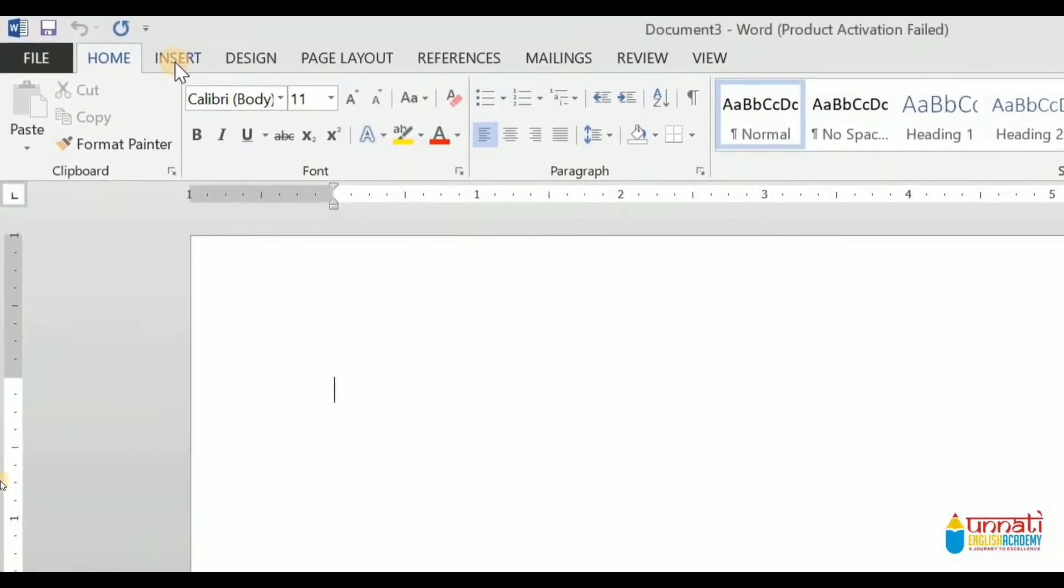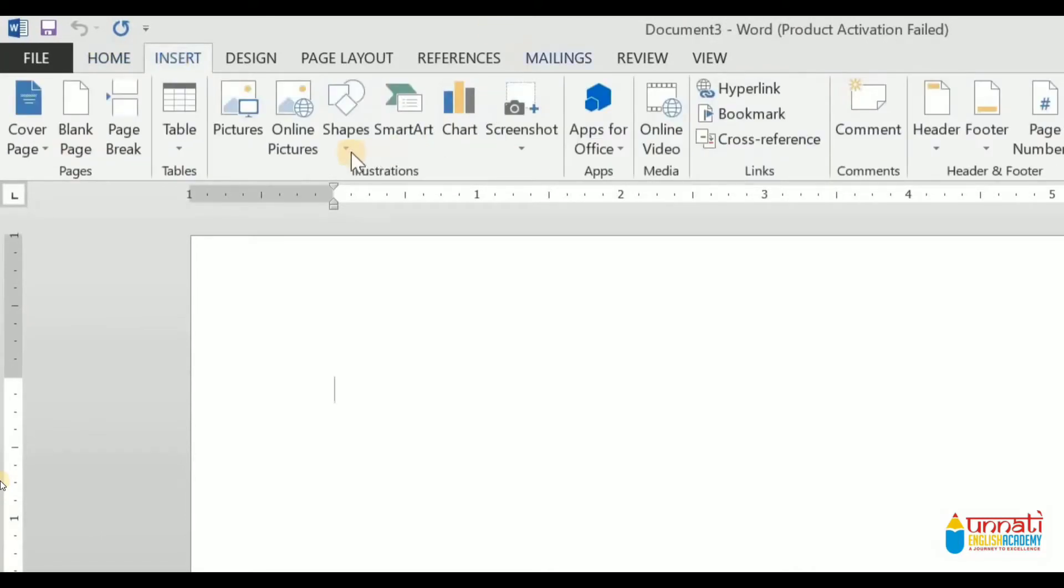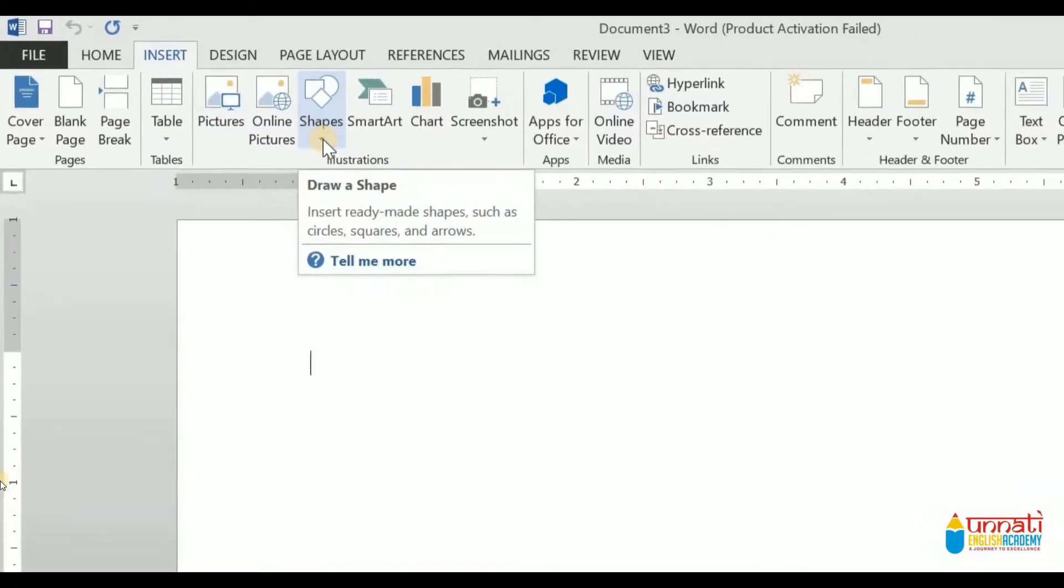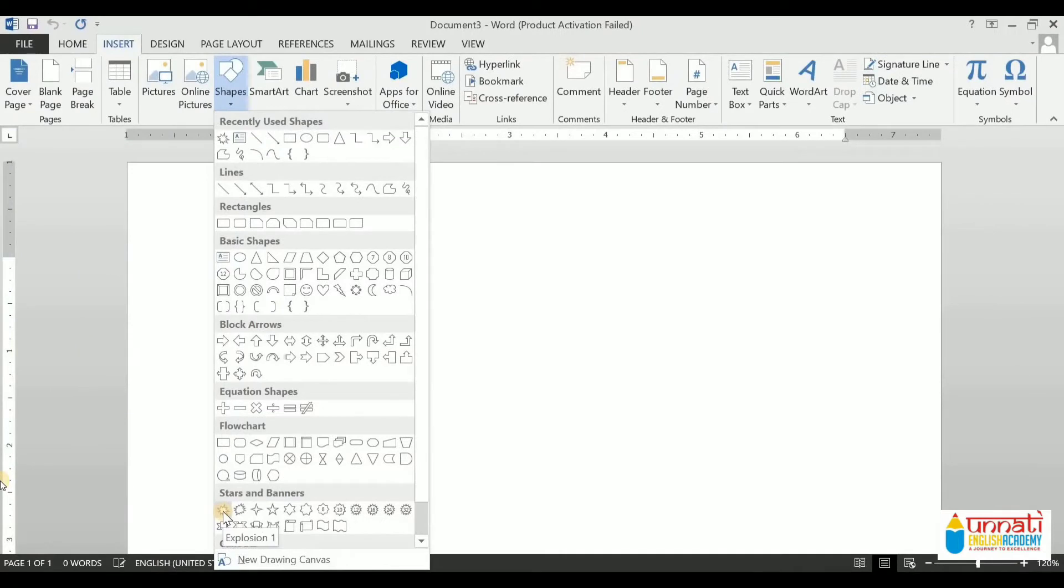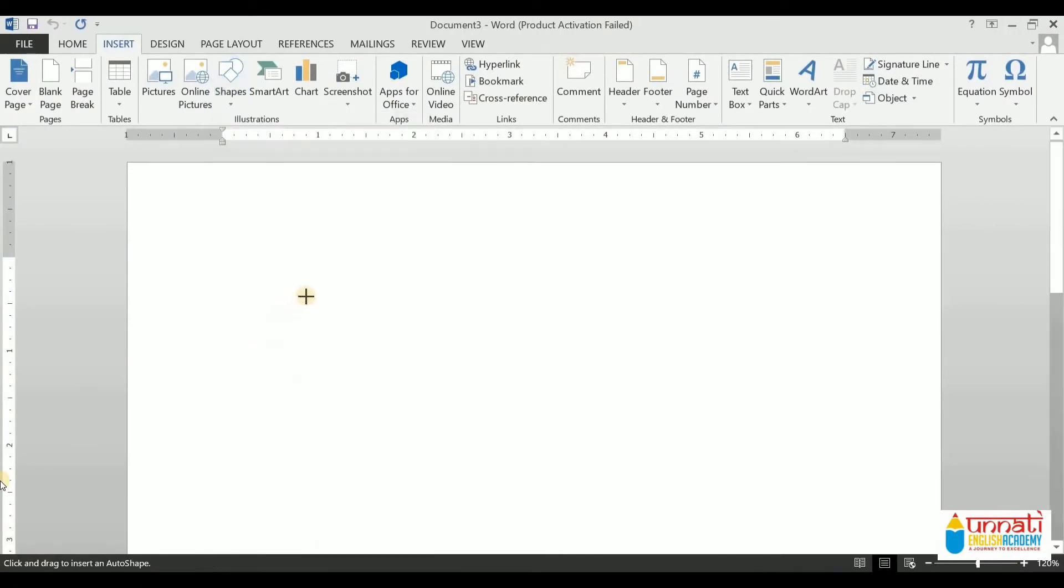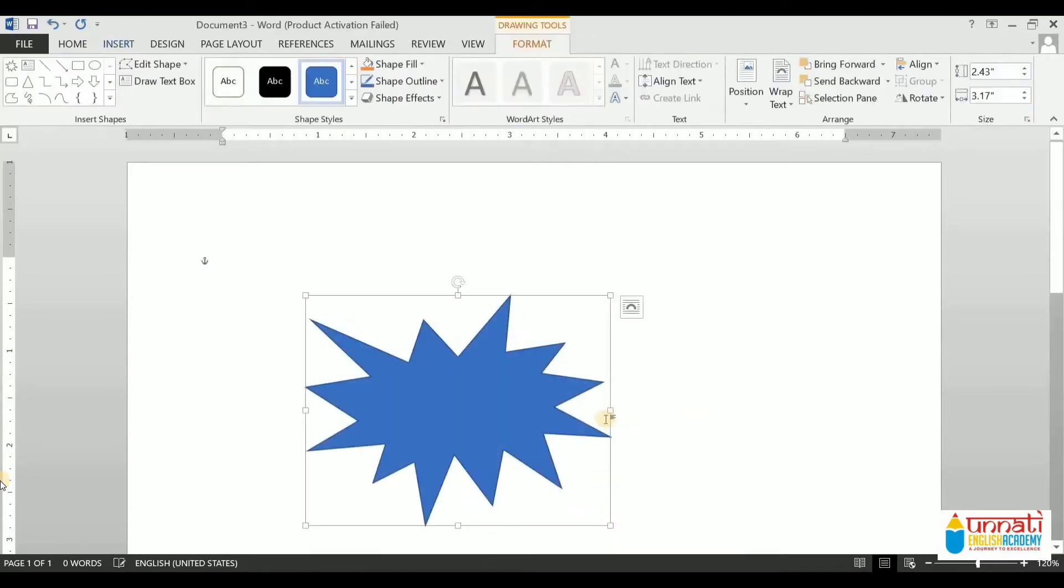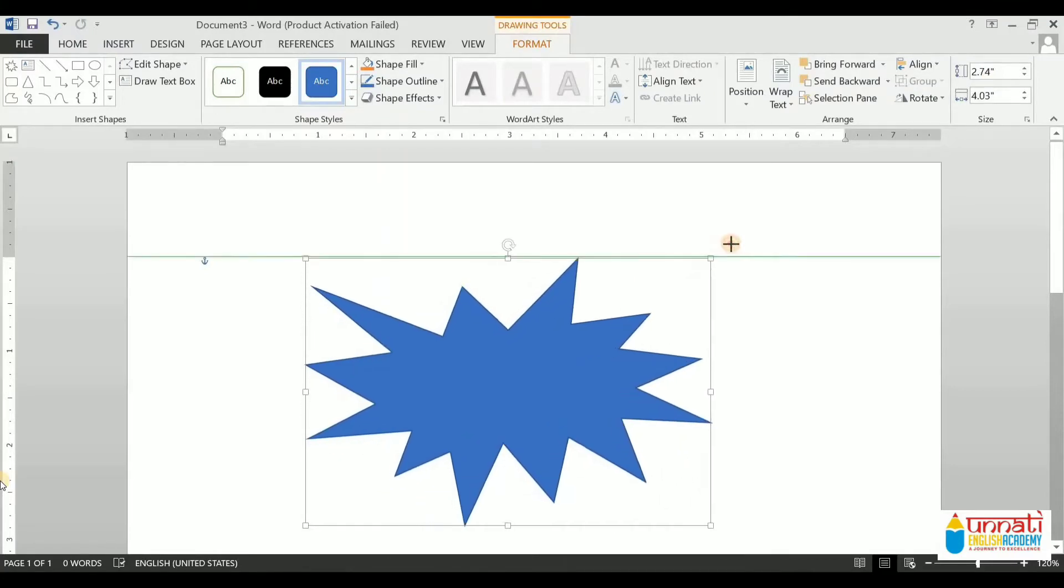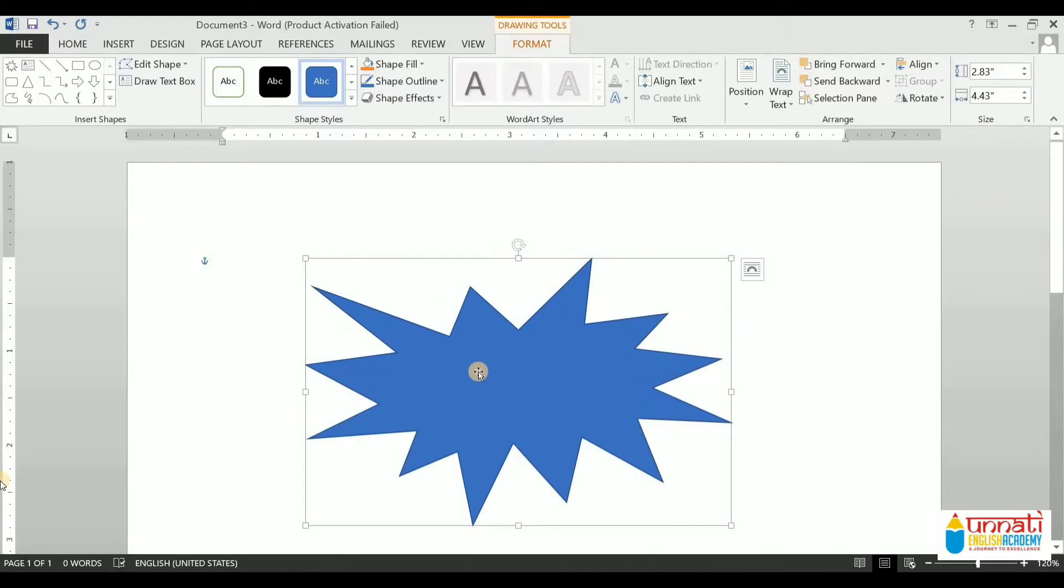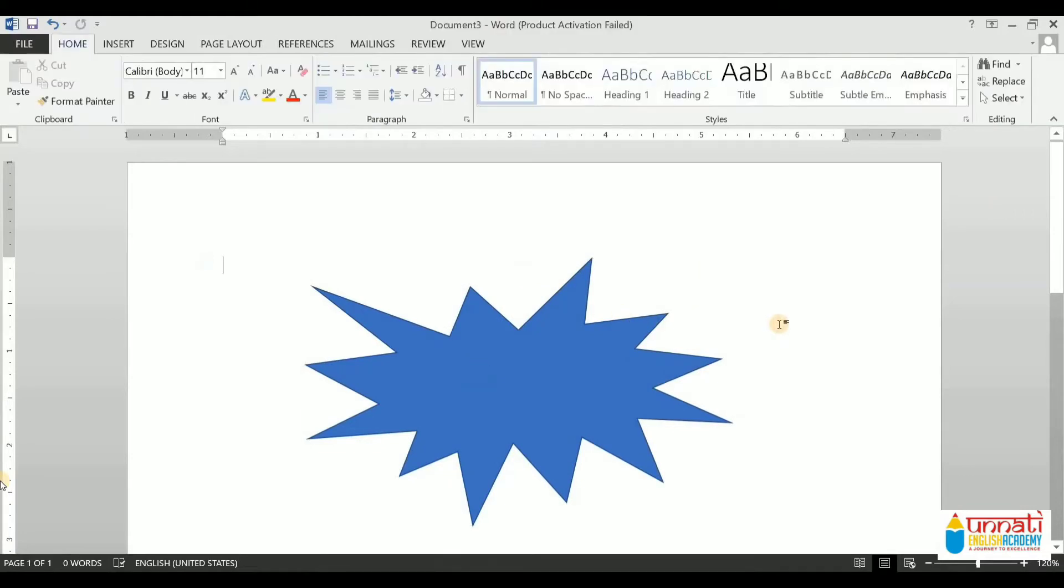Now in the Illustrations group, select the option Shapes. Click on that arrow and select a shape from the drop-down menu. There are many shapes available, you can choose any. Click and drag the mouse until the shape is the desired size. Now at last, release the mouse button. So here your shape is ready.